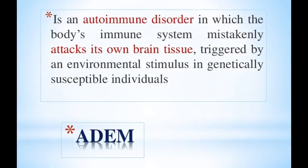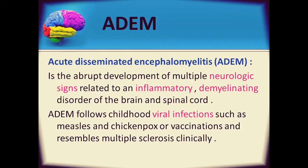Acute Disseminated Encephalomyelitis accounts for around 10% of all known cases of encephalitis. ADEM usually affects children and begins after a childhood rash, other viral infections, or immunizations.